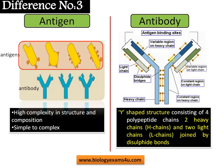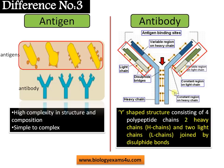The Y-shaped structure consists of two heavy chains and two light chains joined by disulfide bonds. A small amount of carbohydrates is also present. These regions constitute the antigen binding site. There are two antigen binding sites in an individual unit, and the lower portion is called the constant region or the FC region.